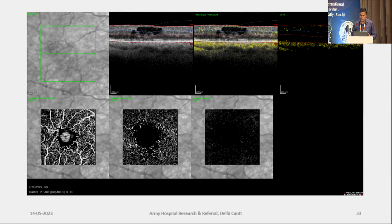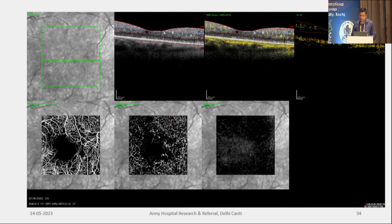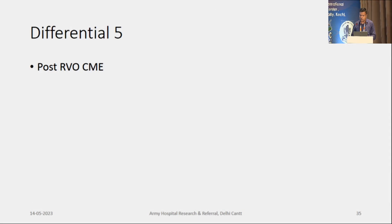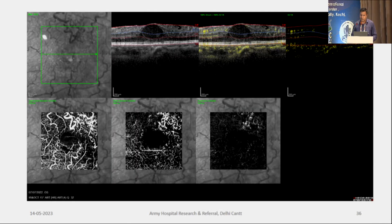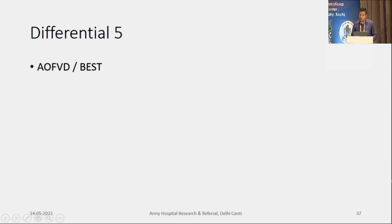In CSME you might get confused when you see deep capillary plexus appearances where interspersed spaces are increasing but there are no actual dilatations. A similar feature can occur in post-RVO macular edema where you might see increased hyper-reflectance on OCTA deep capillary plexus images — but try to see that they are not symmetrical along the foveal superior-inferior axis. This asymmetry is the hint that we are not dealing with MacTel.